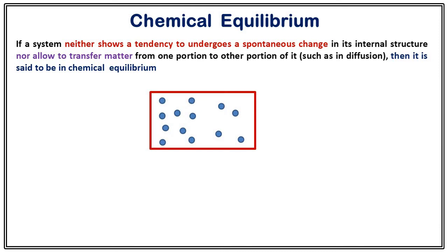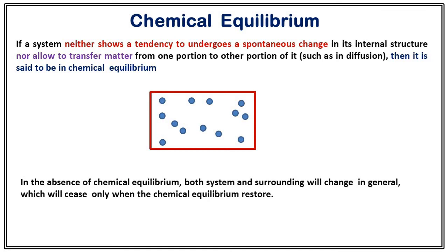Looking at this cartoon, it is clear that the density of particles on the left is much higher than on the right. The system is not in chemical equilibrium, so matter transfers from left to right. Given enough time, the density of particles becomes uniform throughout and there is no longer any transfer of matter. In the absence of chemical equilibrium, the system changes until the chemical equilibrium state is restored — meaning no transfer of matter and no spontaneous change in internal structure.